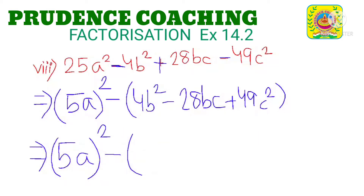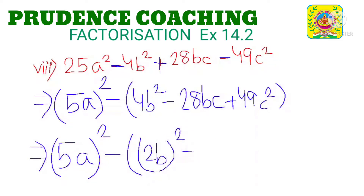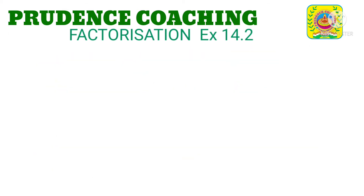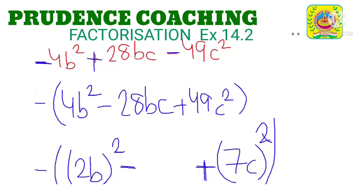So we have 5a the whole square right as it is. Here 4b square — 4 can be written as 2 square, so 2 square b square can be written as 2b the whole square. Minus we have 28bc. We will be writing this afterwards. Here we have 49 — 49 is 7 square — and c square, so 7c the whole square.